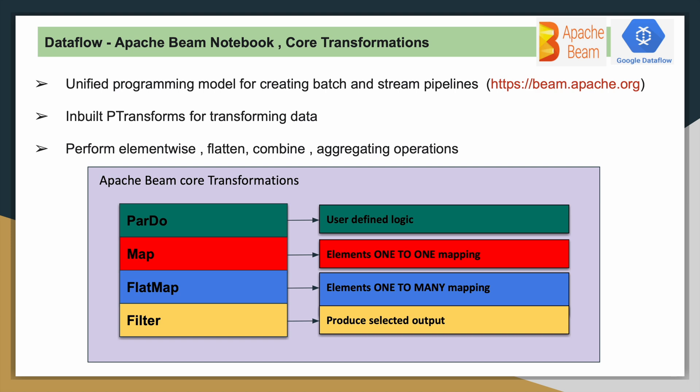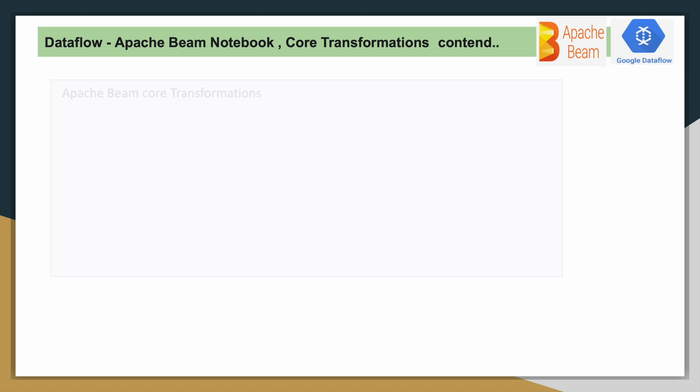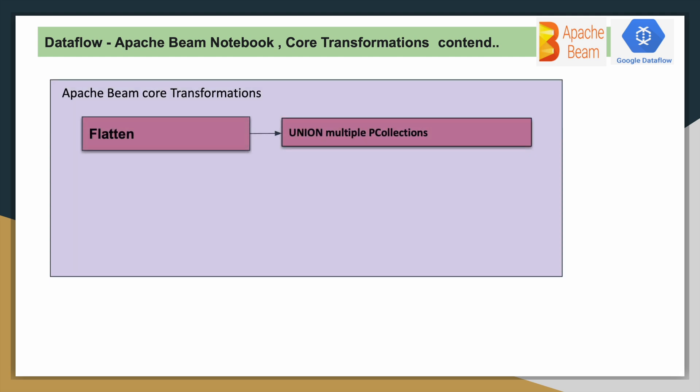Then Filter: if there is a collection of elements in a P collection and you have to produce selected elements as output, you apply this transformation called Filter, where you provide the logic to filter those elements. The next one is Flatten: if there are two P collections and you have to union both, similar to using the UNION keyword in SQL, you use this Flatten transformation.